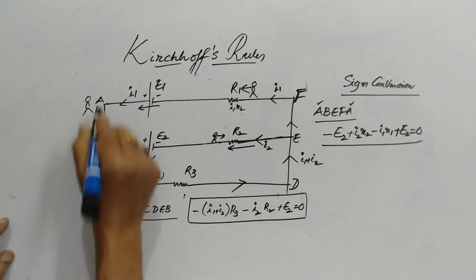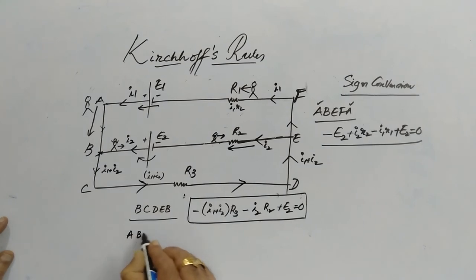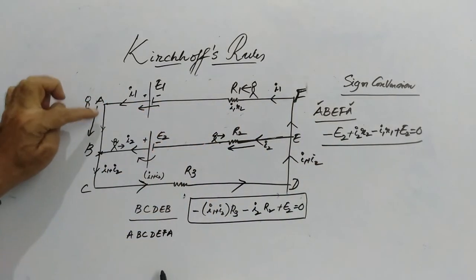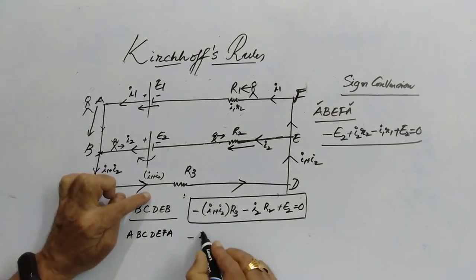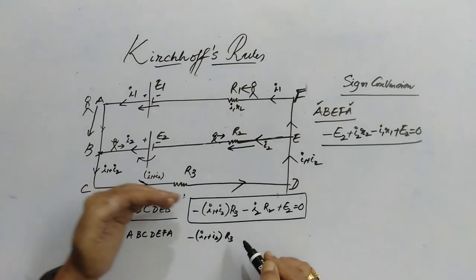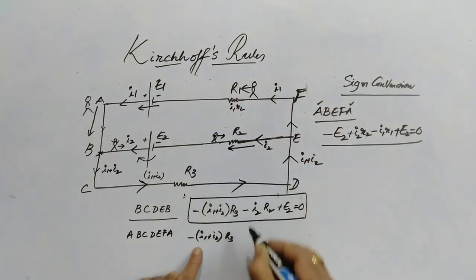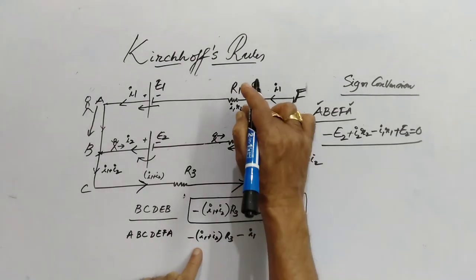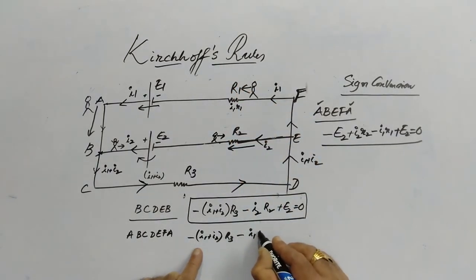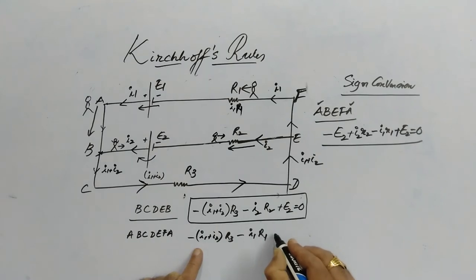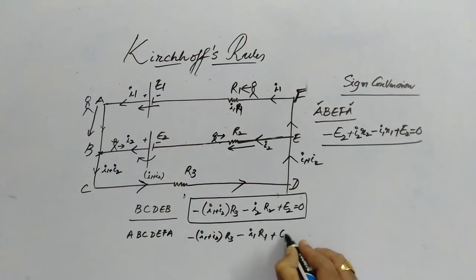Now let's talk about the bigger outer loop A-B-C-D-E-F-A. In this, minus (i1 + i2)*R3 — because I am in the same path as the current, therefore negative. That is also negative: minus i1*R1. And this is in the increasing direction of potential, so plus E1 equals zero.